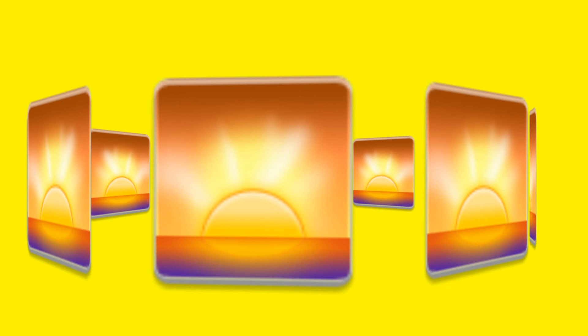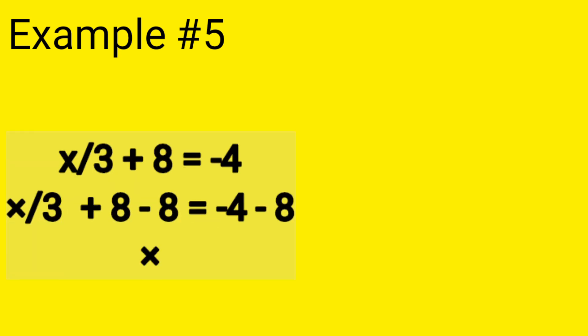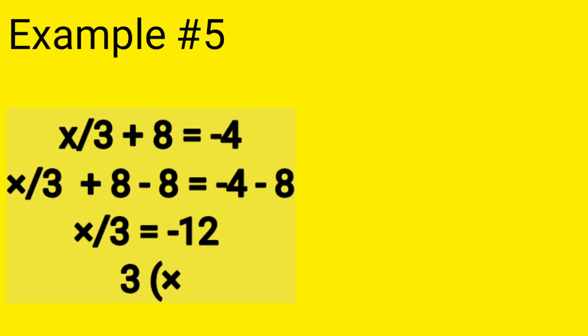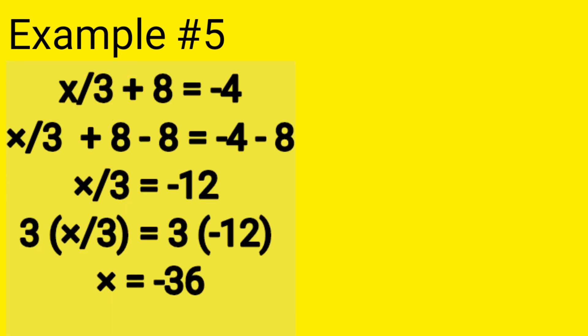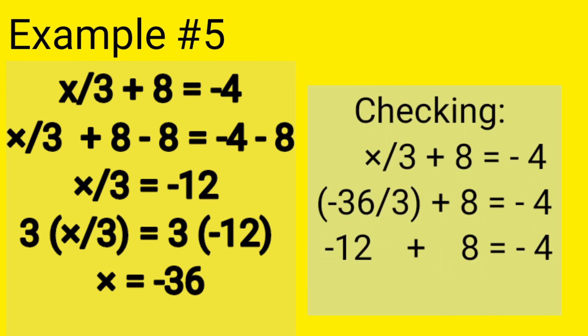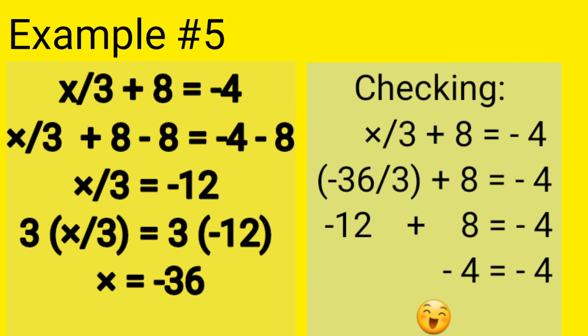So let's proceed to example number 5. Our example number 5 is x over 3 plus 8 equals negative 4. So the answer is x equals negative 36. So let's check if it is correct. So our answer is correct.